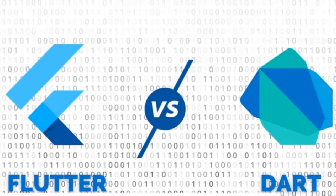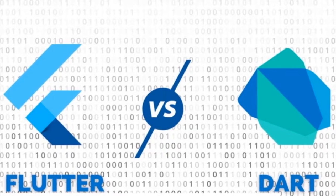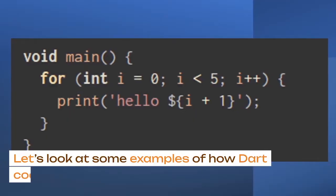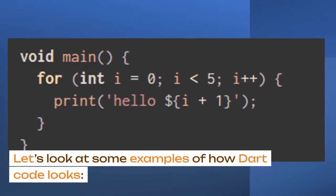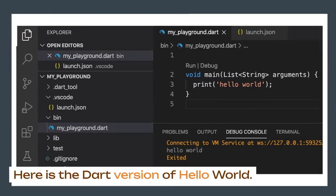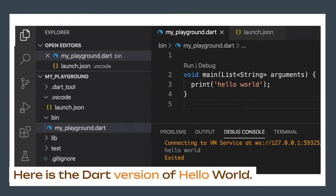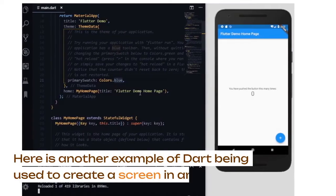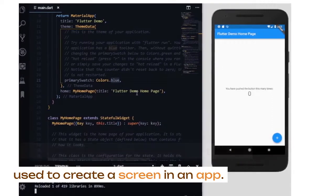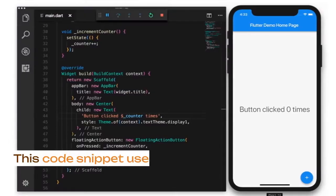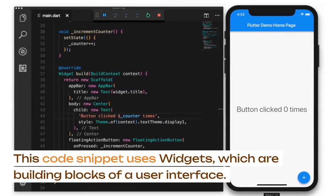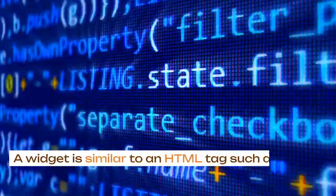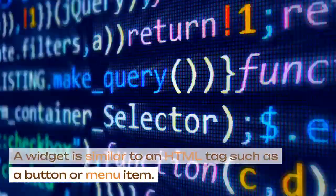Dart with Flutter offers a compelling combo of performance and design. Let's look at some examples of how Dart code looks. Here is the Dart version of Hello World. Here is another example of Dart being used to create a screen in an app. This code snippet uses widgets, which are building blocks of a user interface. A widget is similar to an HTML tag, such as a button or menu item.